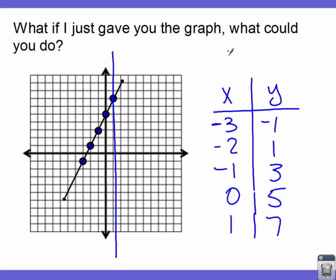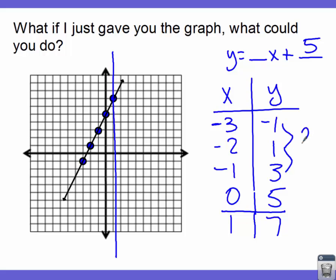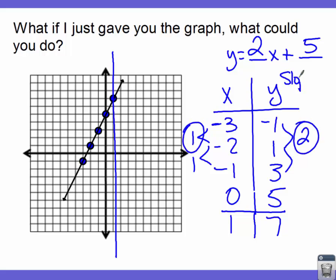Now that we have our coordinates, can you come up with the slope and y-intercept? We write y equals blank x plus blank. The y-intercept is the y value when x is zero — you can find it in the t-chart where y is five, or on the graph where it also equals five. The slope is the pattern on the right divided by the pattern on the left: two divided by one is two.